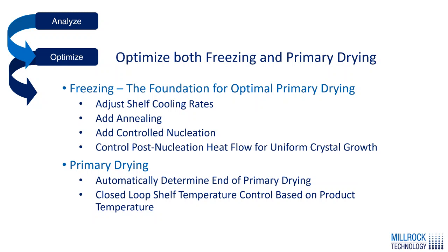This is important because during nucleation, only about 10% of the available water creates ice crystals, so 90% of the freezing takes place post-nucleation. In primary drying, we can determine the end of primary drying automatically using pressure differential between the capacitance manometer and the Pirani. We can also do closed-loop temperature control, which we call auto-dry, where we control the shelf temperature based on the product temperature and maintain the product temperature below its critical point, thus optimizing the primary drying cycle.